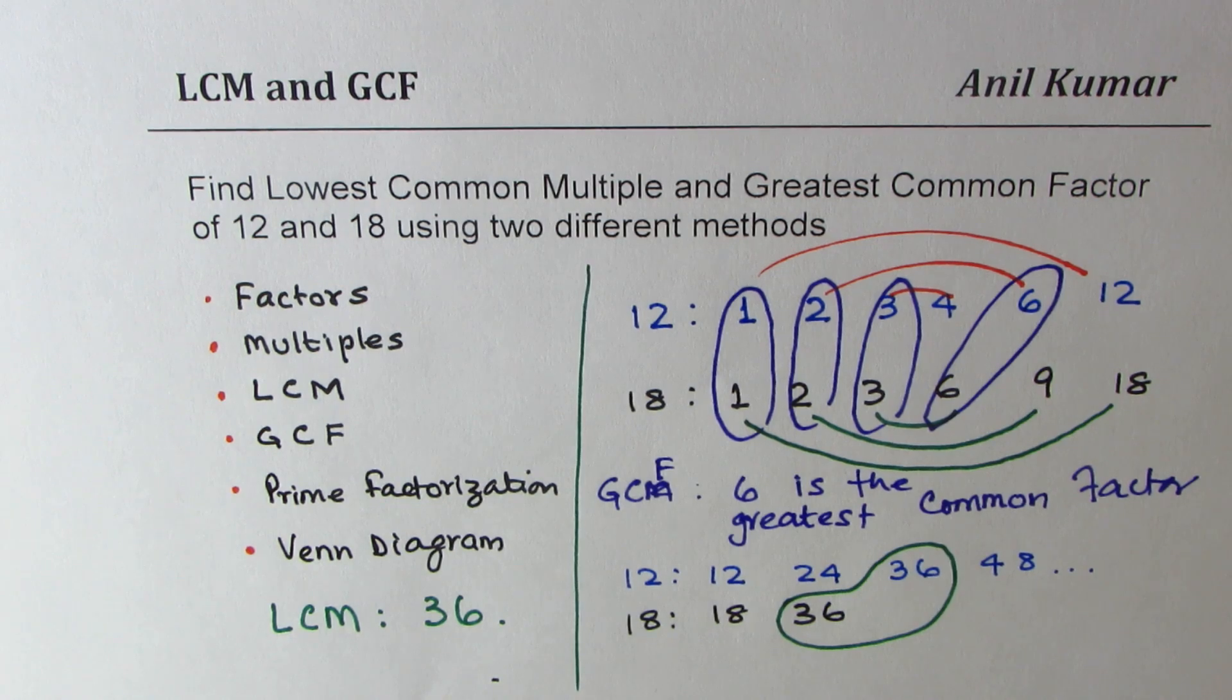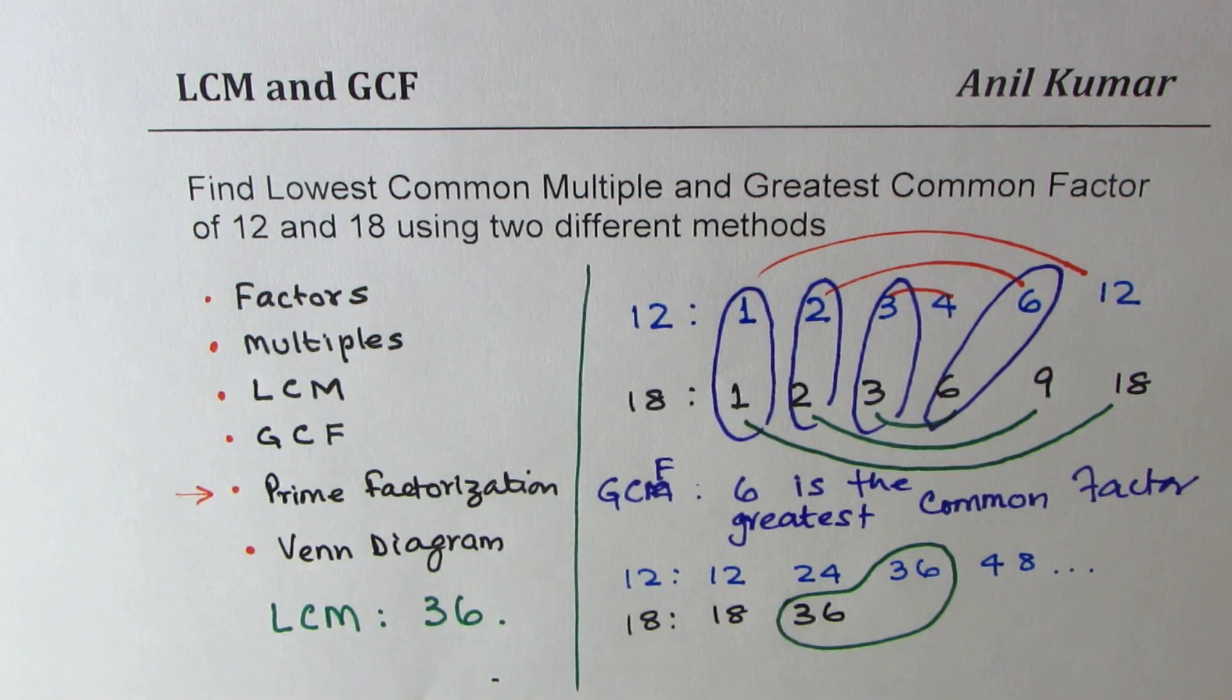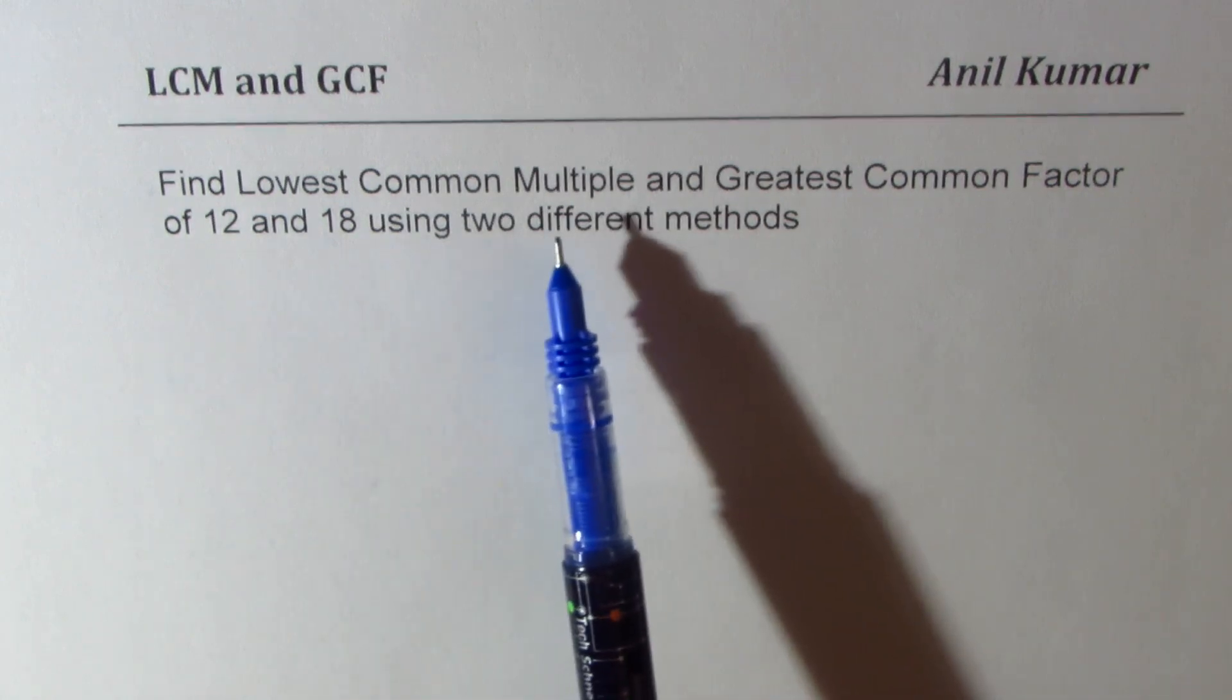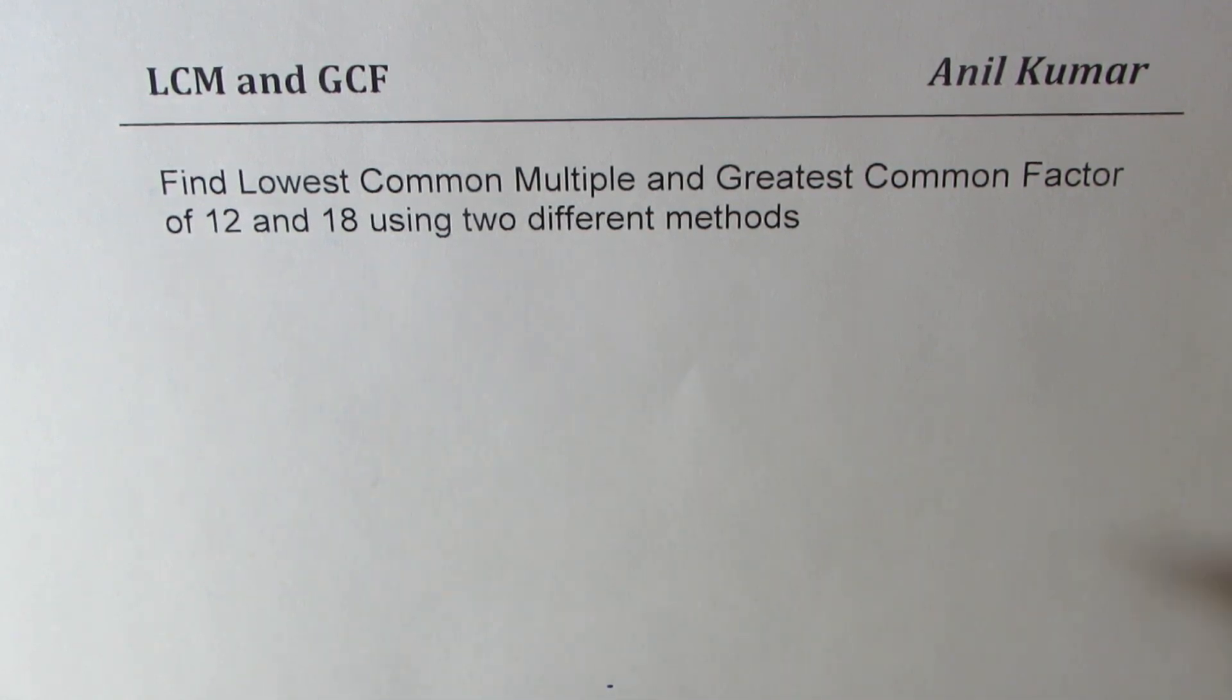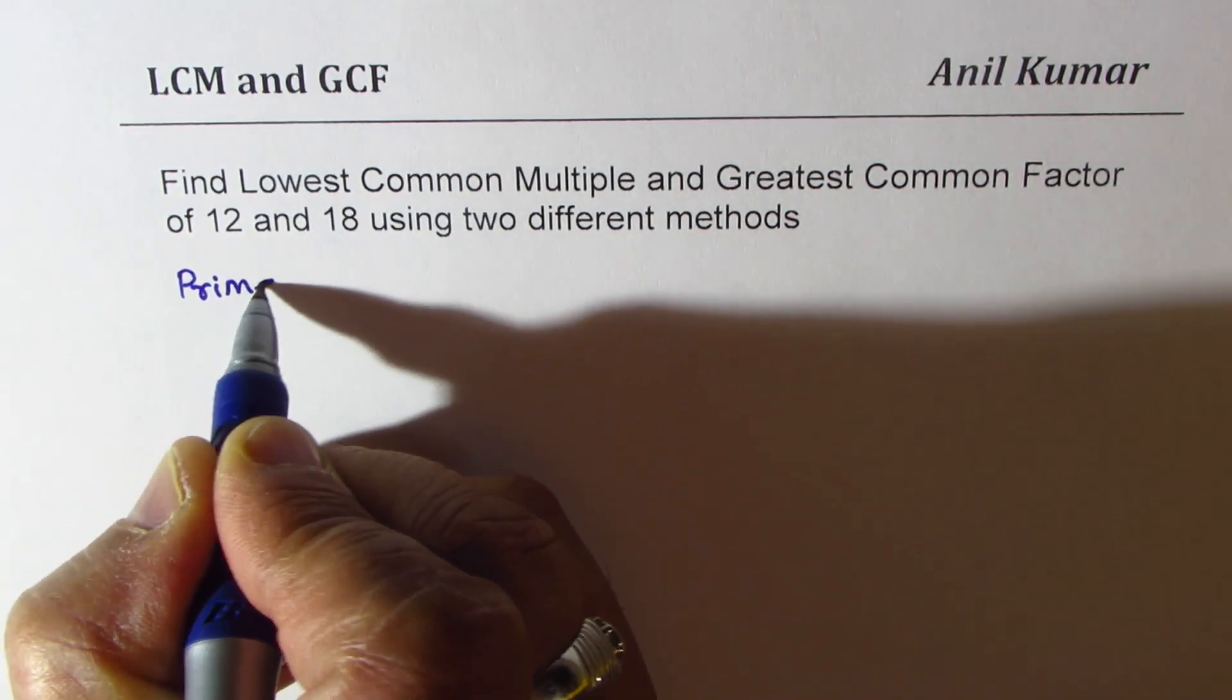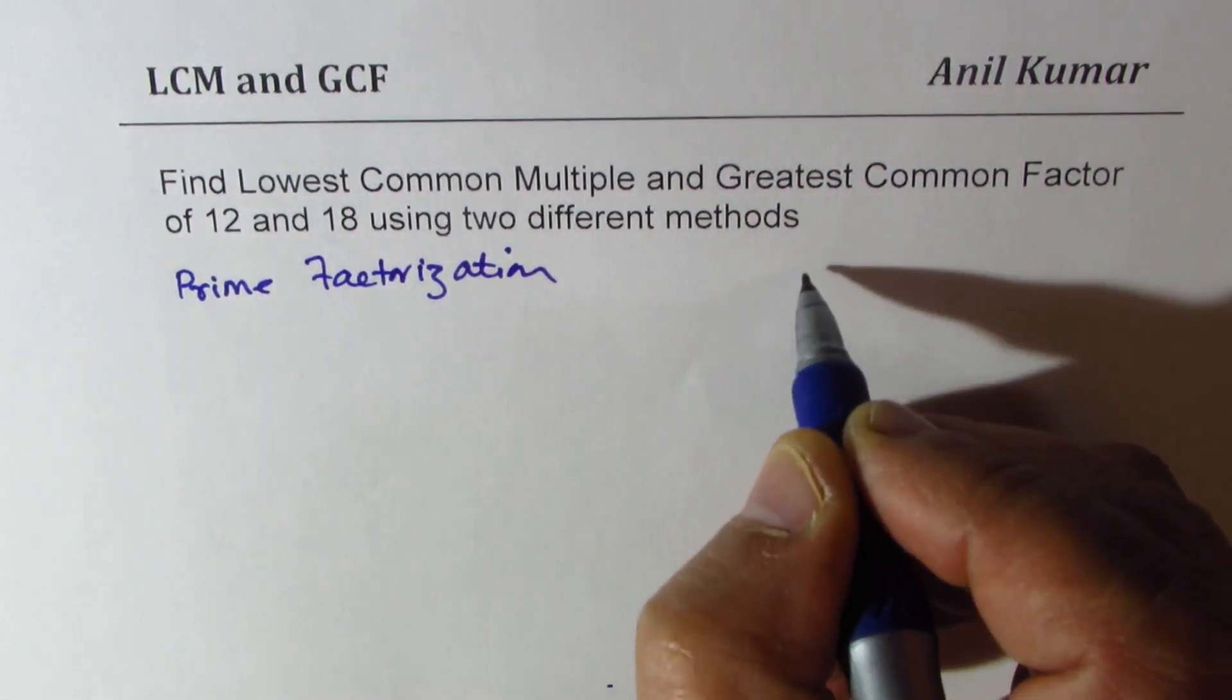This exercise helps us find very easily lowest common multiple and greatest common factor. Now let us see how to apply prime factorization and Venn diagram to answer this question. This is the second method, which we call prime factorization and Venn diagram.